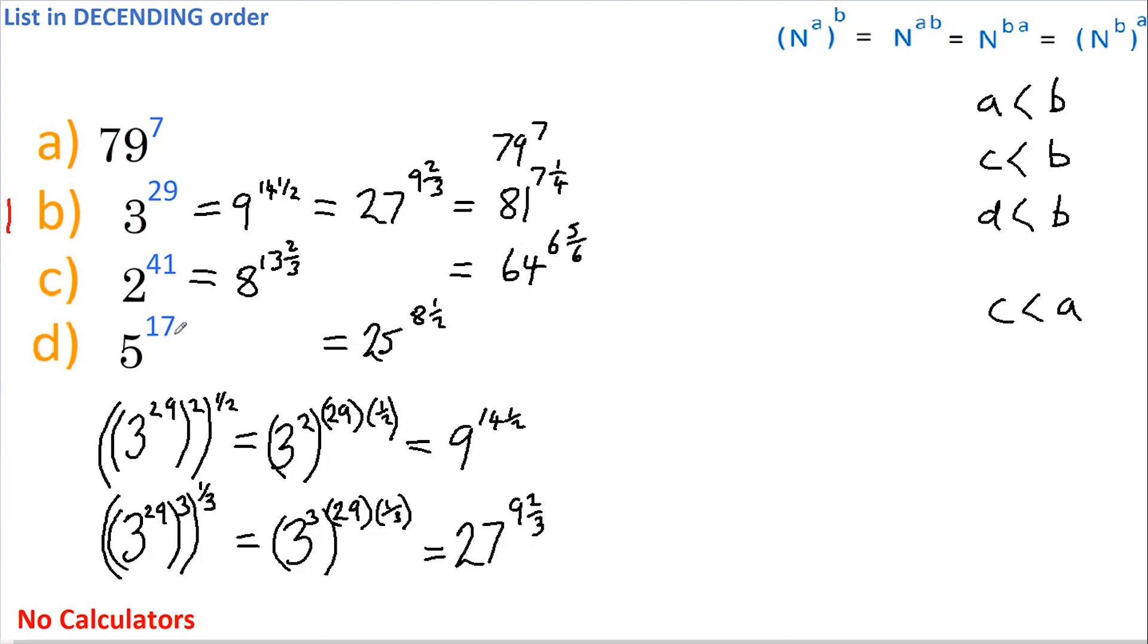Finally, I'm going to compare c and d. I'm going to take c, raise it to the power of 7 and take the seventh root, so 2 to the power of 7 is 128, and the seventh of 41 is 5 and 6 sevenths. I'm then going to take d, cube it and take the third root, which gives us 125, and 17 divided by 3 is 5 and 2 thirds. Both the base and power of d are less than c. Therefore, d is less than c.